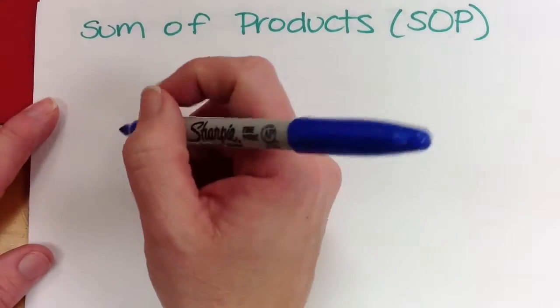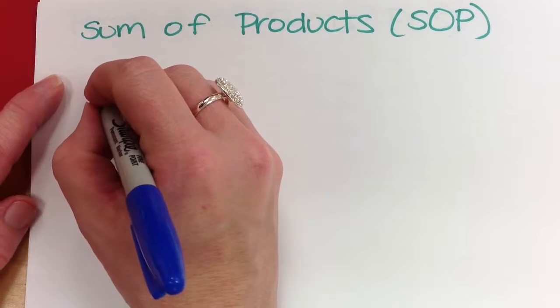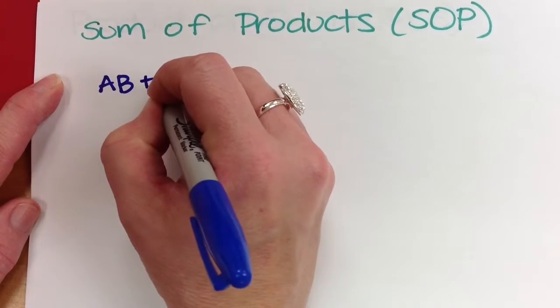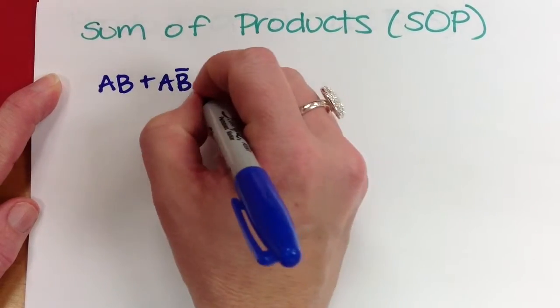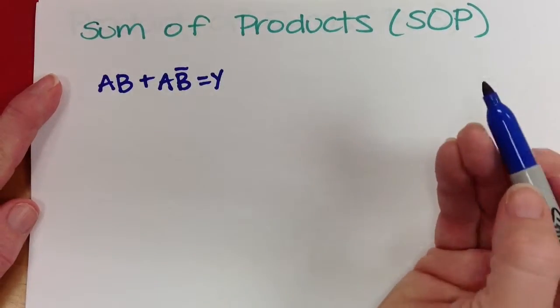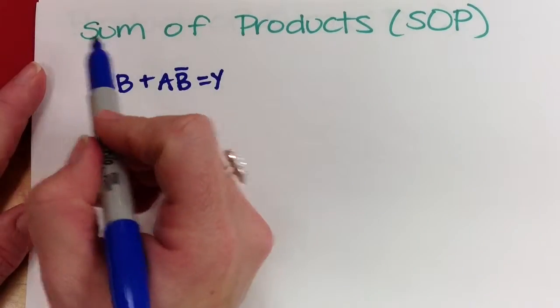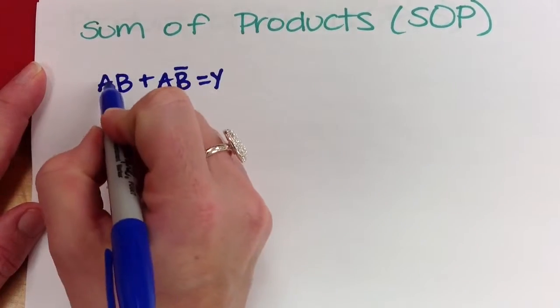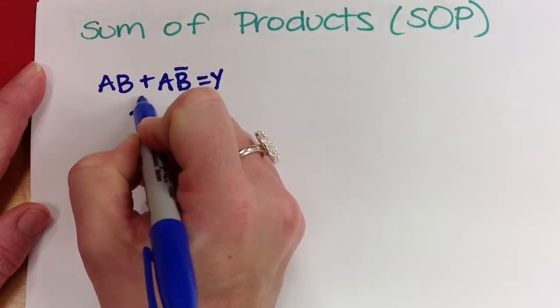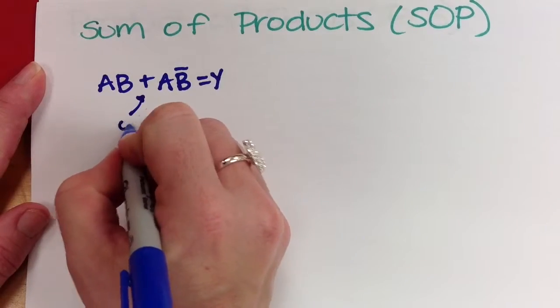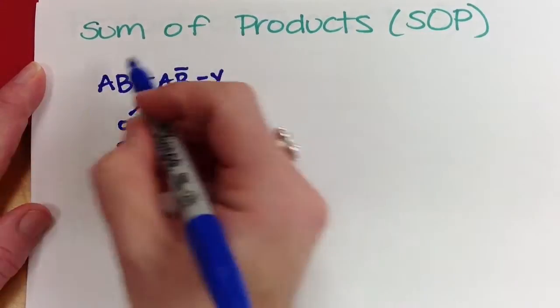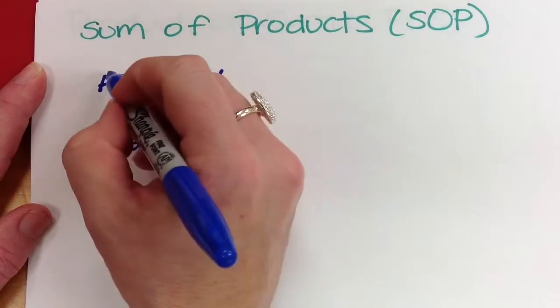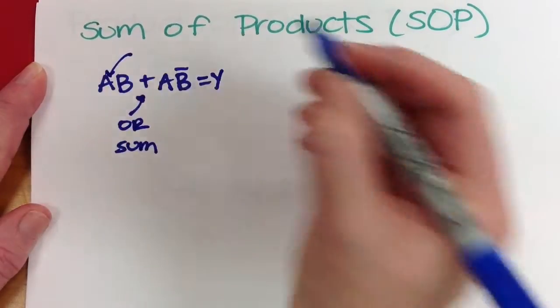We call it this because we have things like A, B, or A, not B, equal to our expression. When we say sum of products, what it is is we are adding, ORing, a sum of things we have multiplied, ANDed.